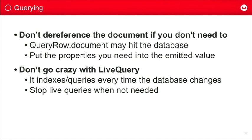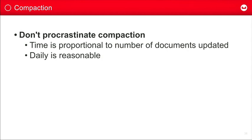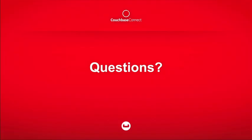Live queries have overhead because they rerun the query every time the database changes, so don't keep a lot of live queries running if you don't need to. During Q&A, a question came up about the document property on query rows: on the server side, the APIs are different — you get rows back as a big JSON array, then need to pull the document ID out and send another request to get the document, so you're very aware of the overhead. In Couchbase Lite you just do row.document.firstName, which hides the fact that there's a database fetch happening.